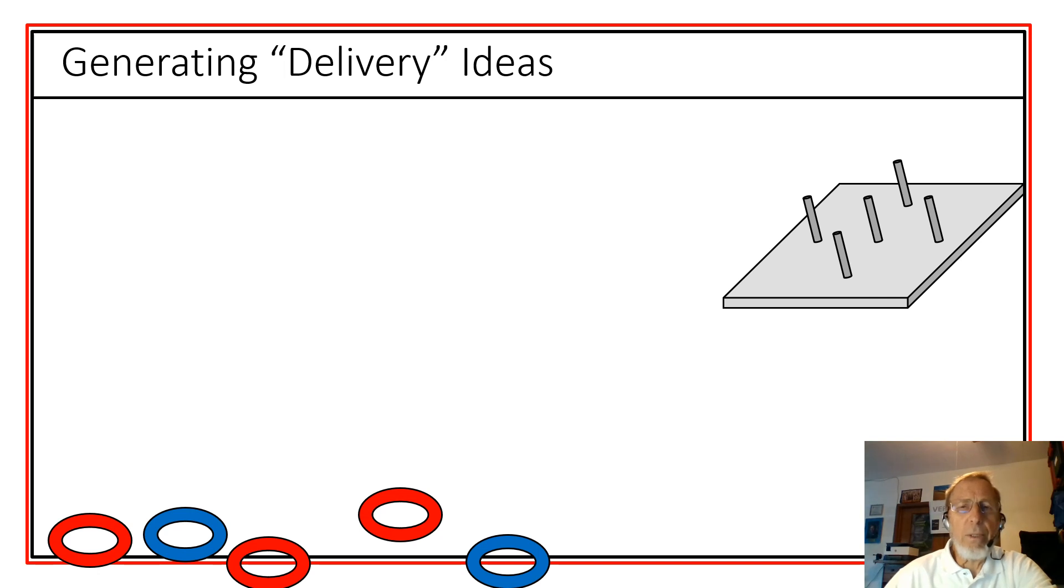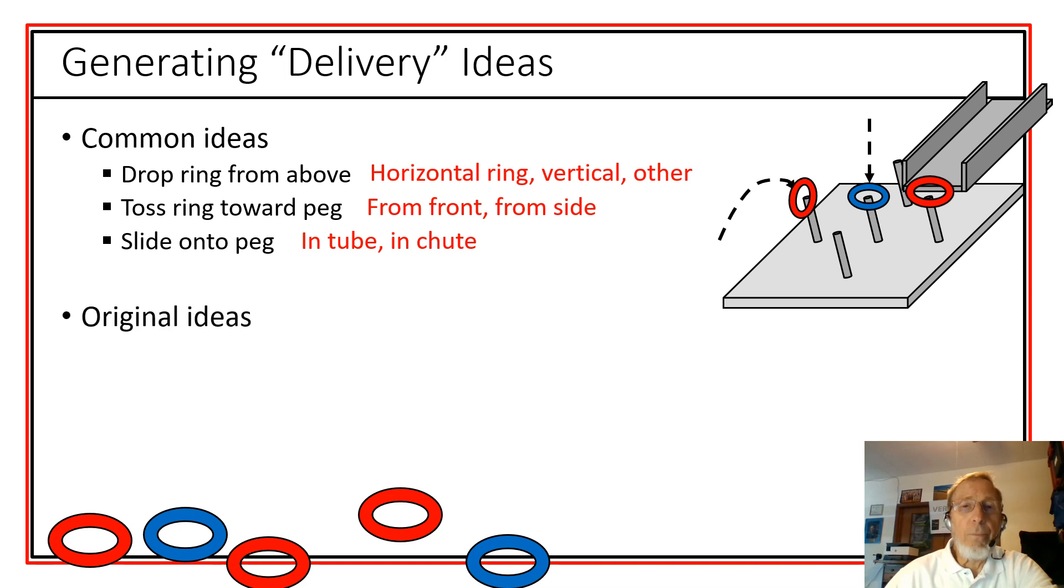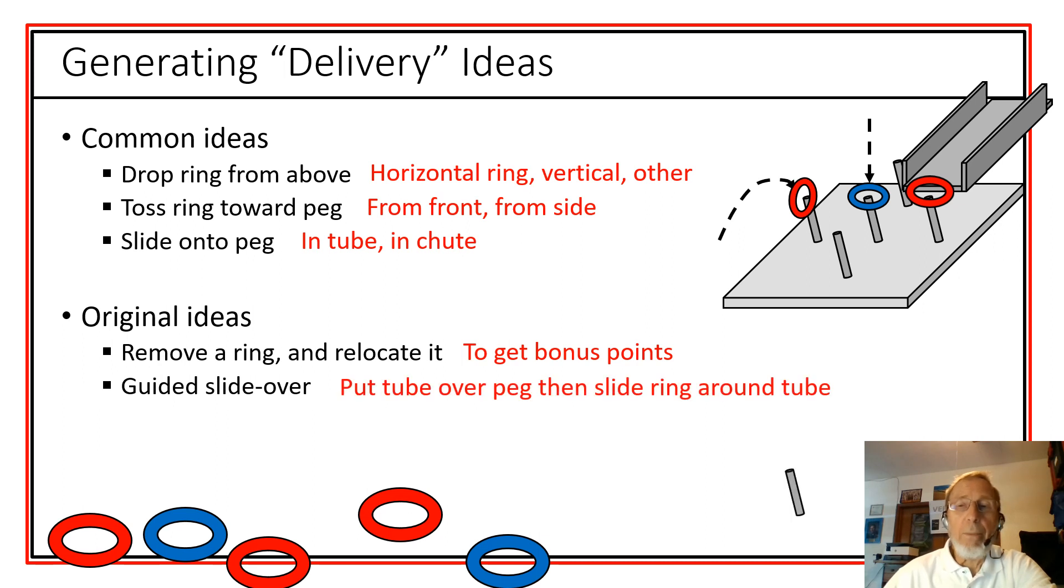When it comes to delivery ideas, again, we start thinking creatively. Some common ideas might include just dropping a ring. Tossing the ring. Again, we have variations. It could be from the side, from the front. Sliding something and then letting it drop. And we could come up with some other more original ideas. Maybe we decide to remove our opponent's ring and then put ours in its place in order to get some bonus points. That may not be allowed, but at least we could think about that. Perhaps guiding. Putting a guide on for sliding a ring over a peg.